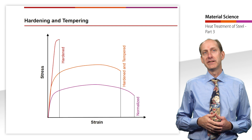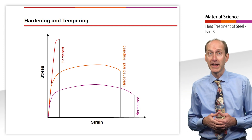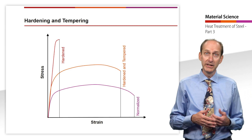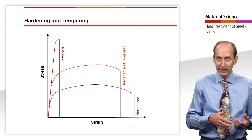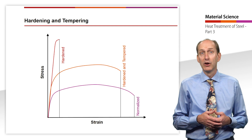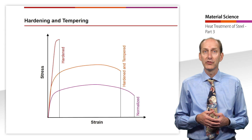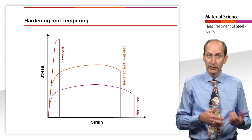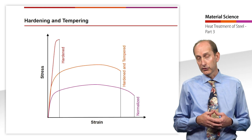These stress-strain diagrams clearly illustrate the different mechanical behavior of steel in the various heat treatment states. The hardened steel exhibits maximum strength with minimum toughness. The normalized steel allows maximum formability at low strength levels. Compared to the normalized state, the hardened and tempered steel shows significantly increased strength characteristics with constant toughness, expressed by the deformation work corresponding to the area under the stress-strain curve.